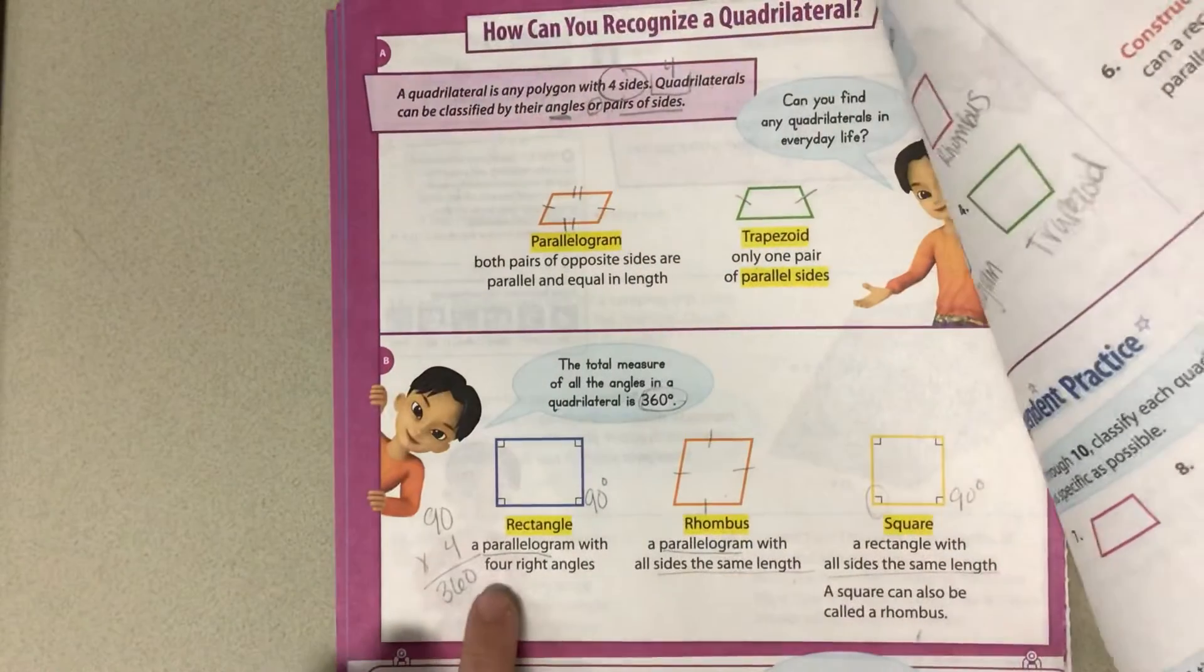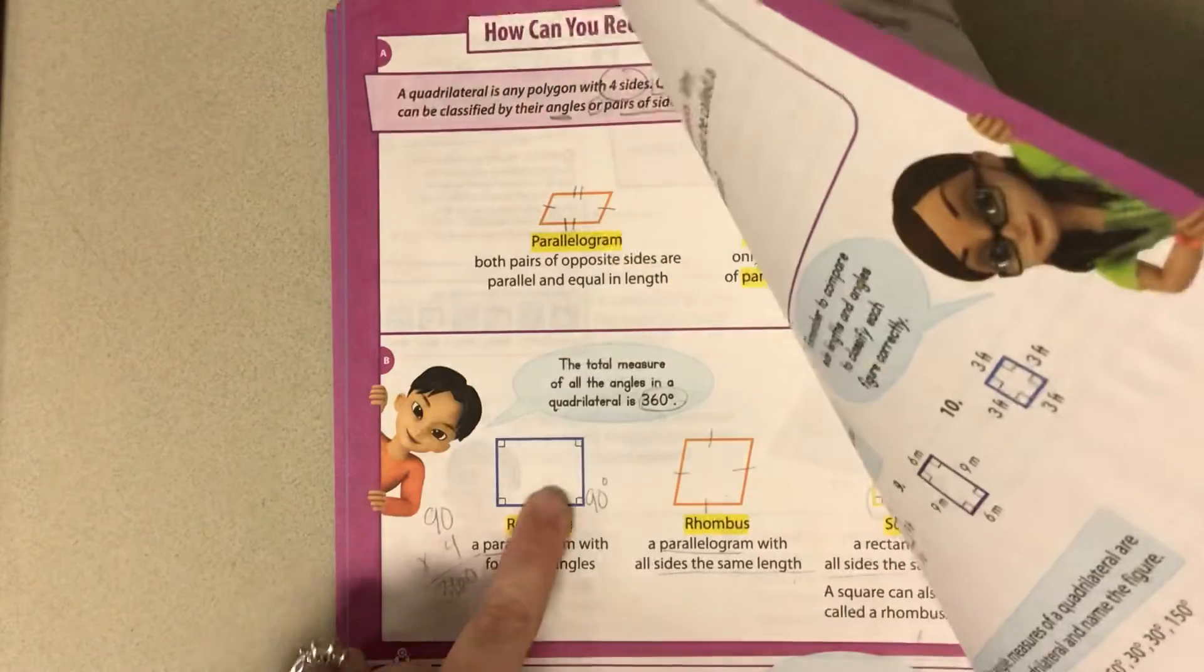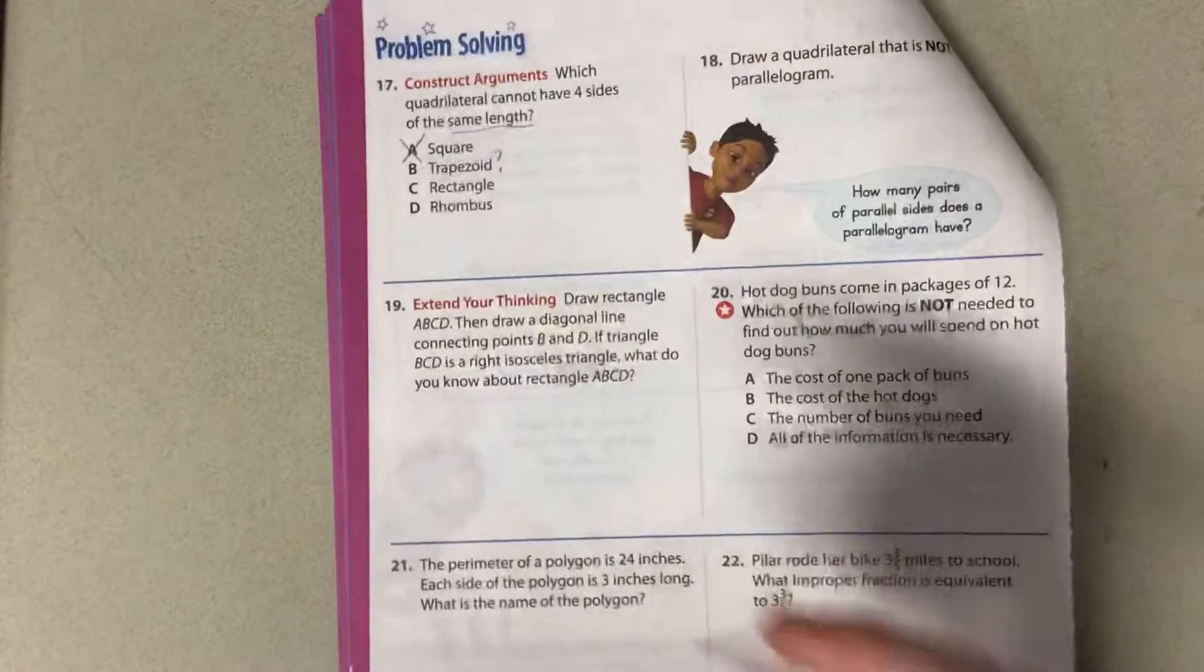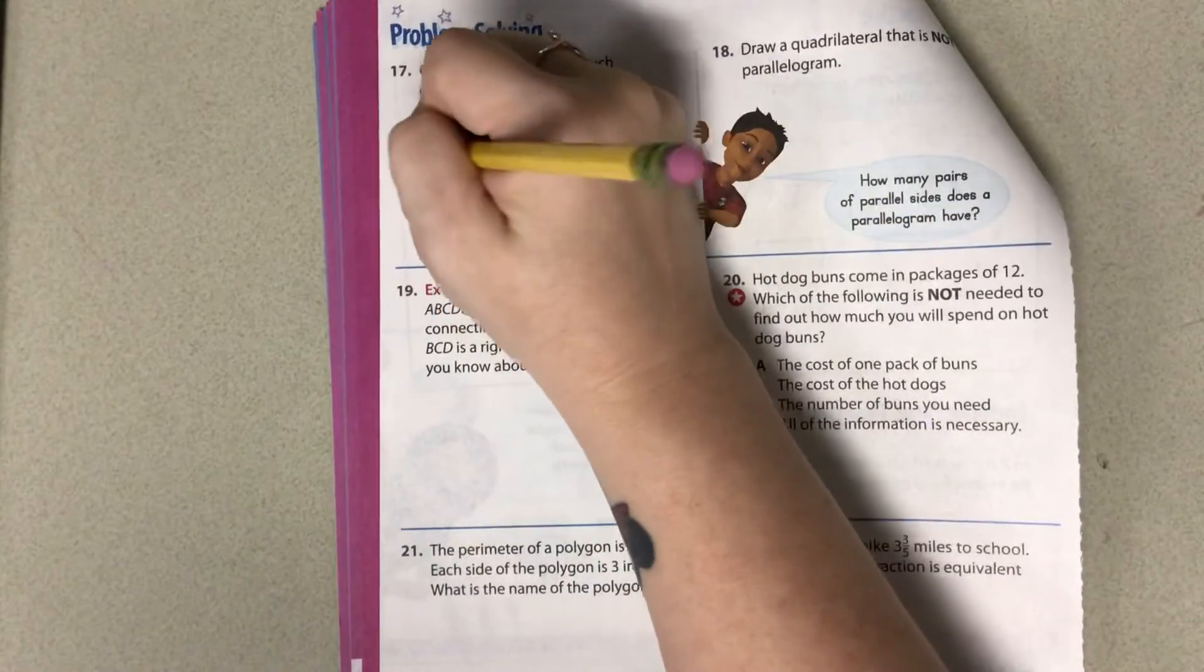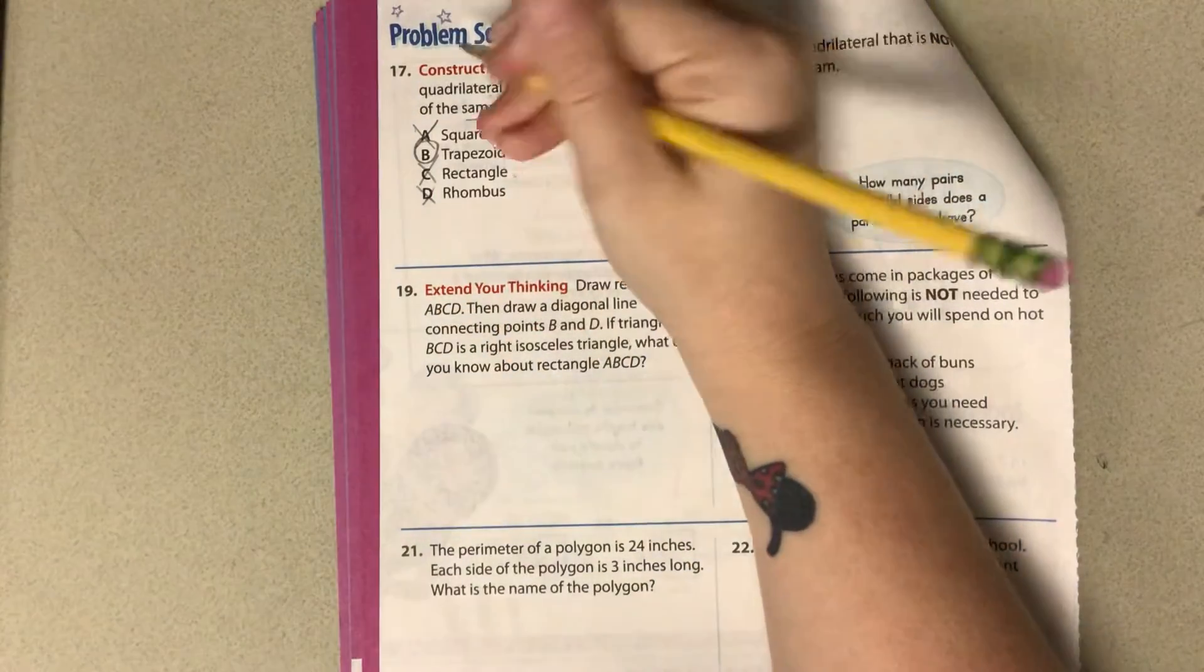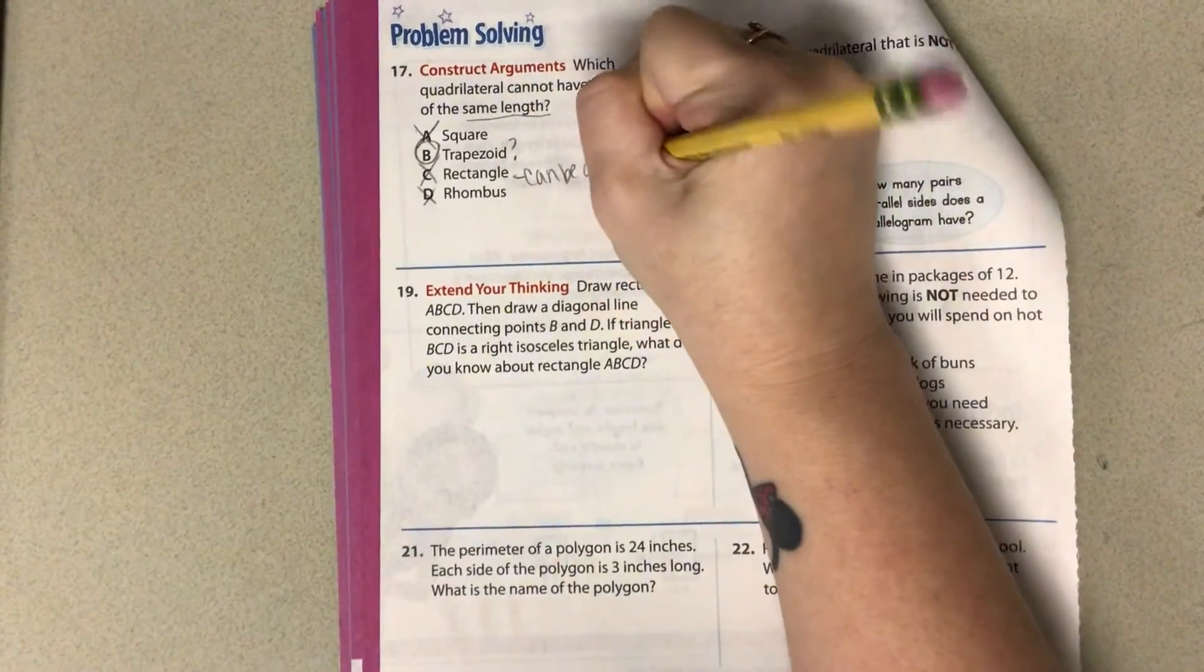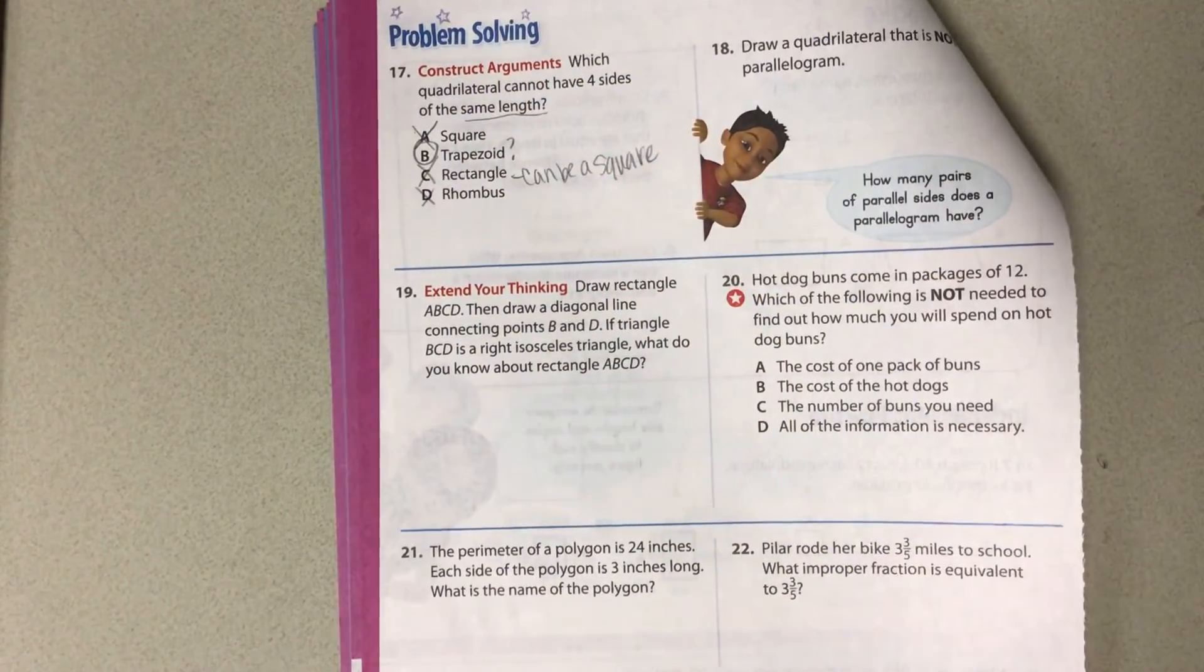A rectangle has four right angles, but all the sides are also not the same length. But they could be because a rectangle can be a square. So we're going to mark that off. A rhombus has all sides same length, so that can't be it. So the only tricky one here is a rectangle, but remember a rectangle can be a square. So therefore, it would have all four sides, and our answer would be B.